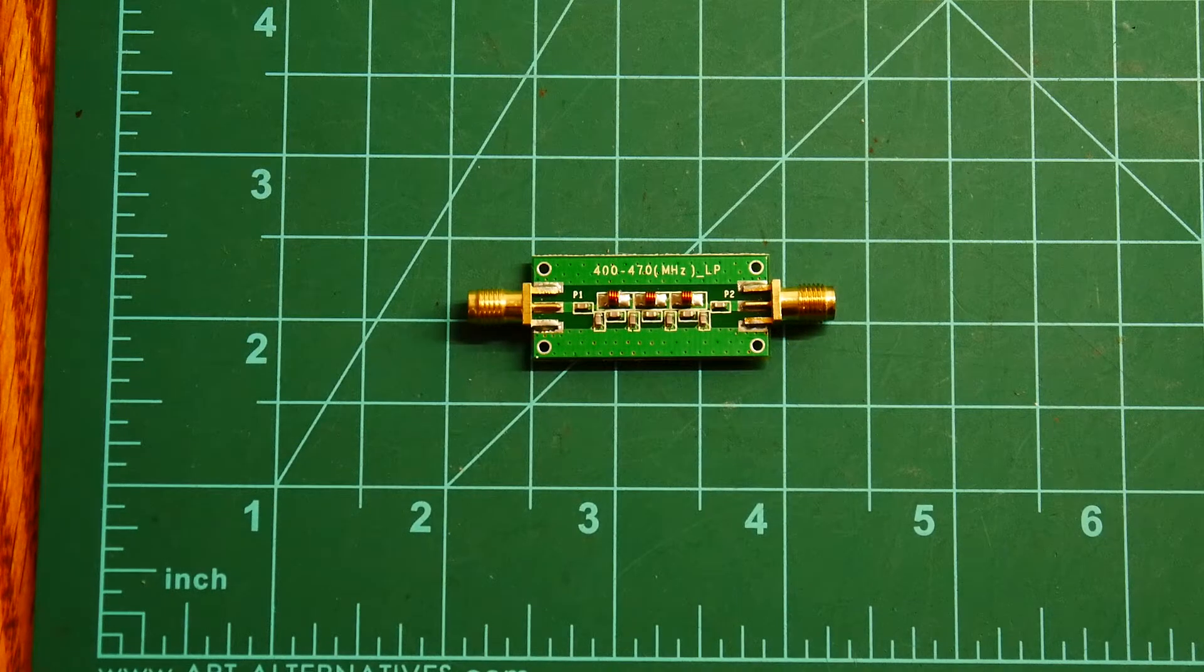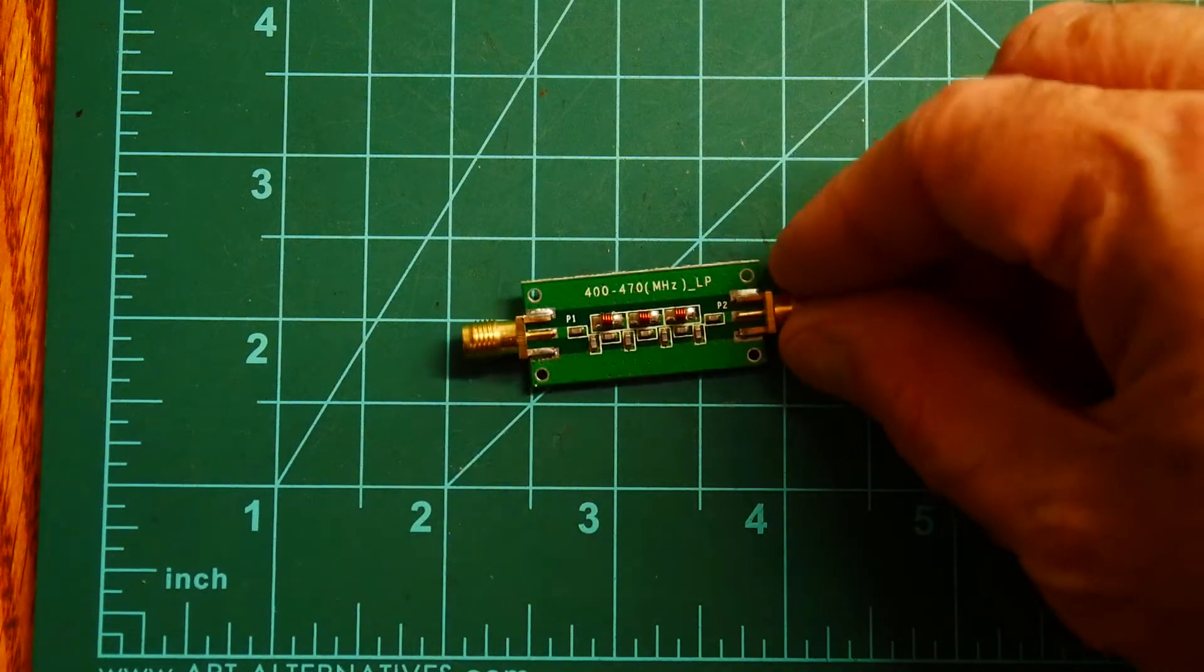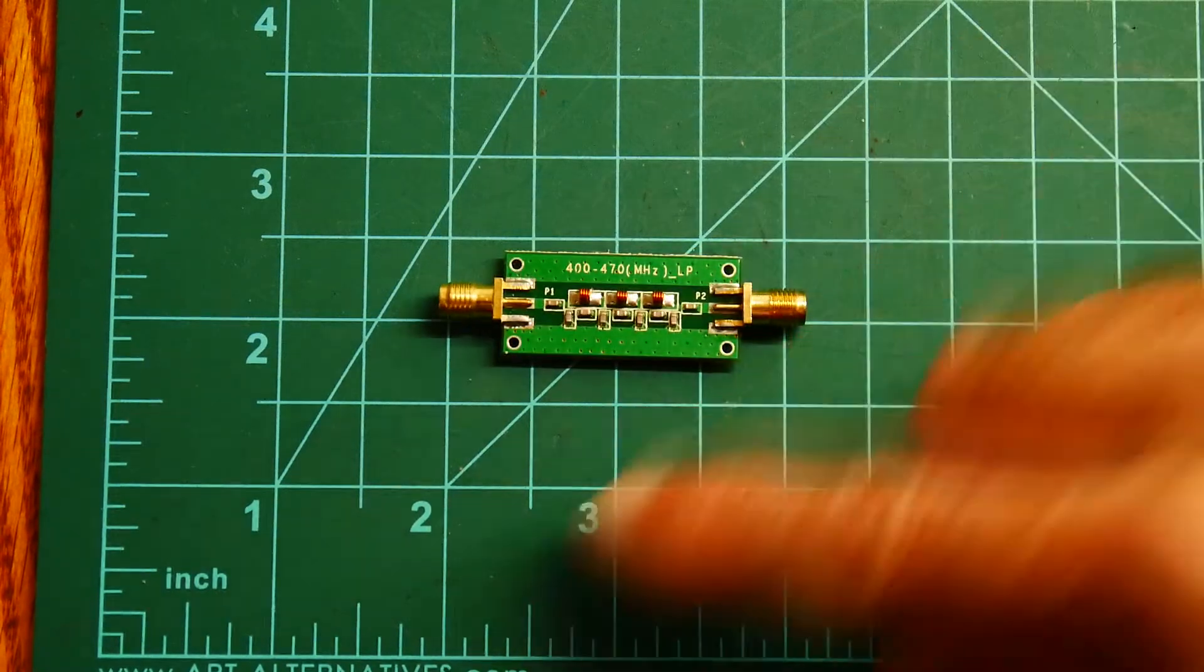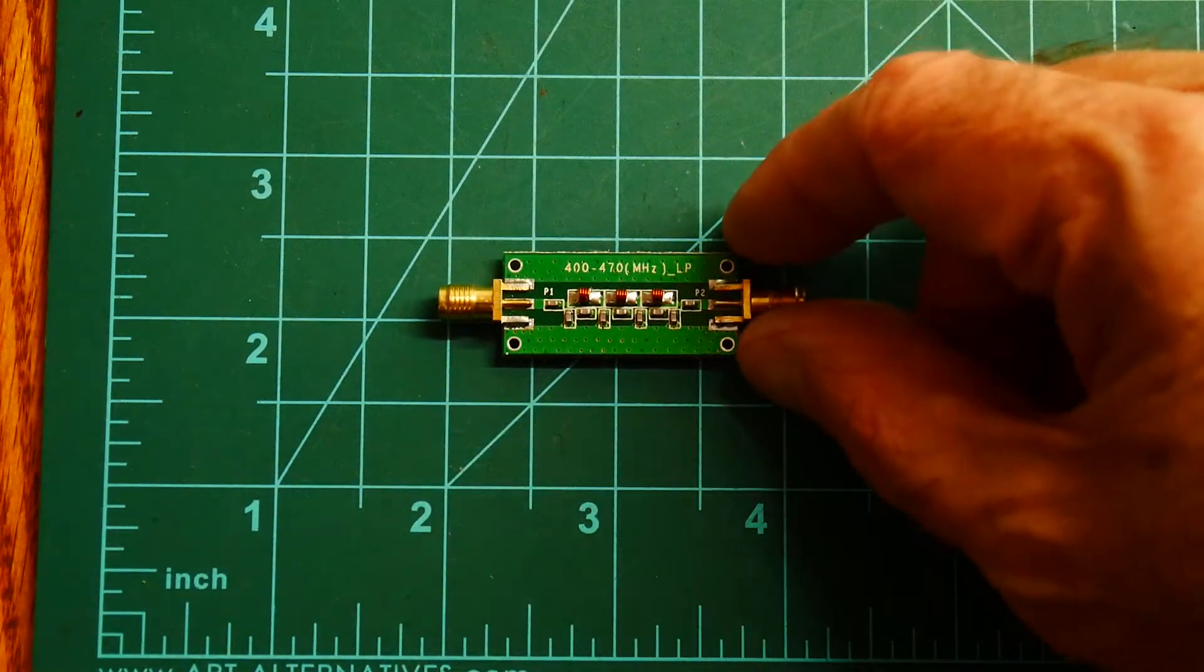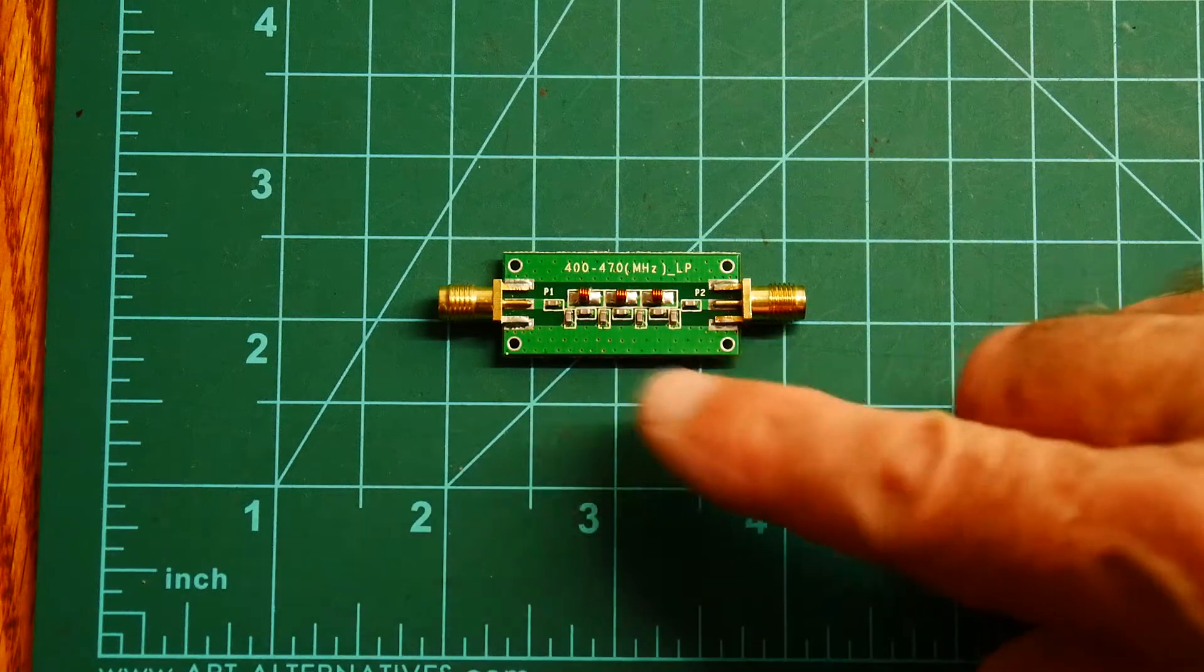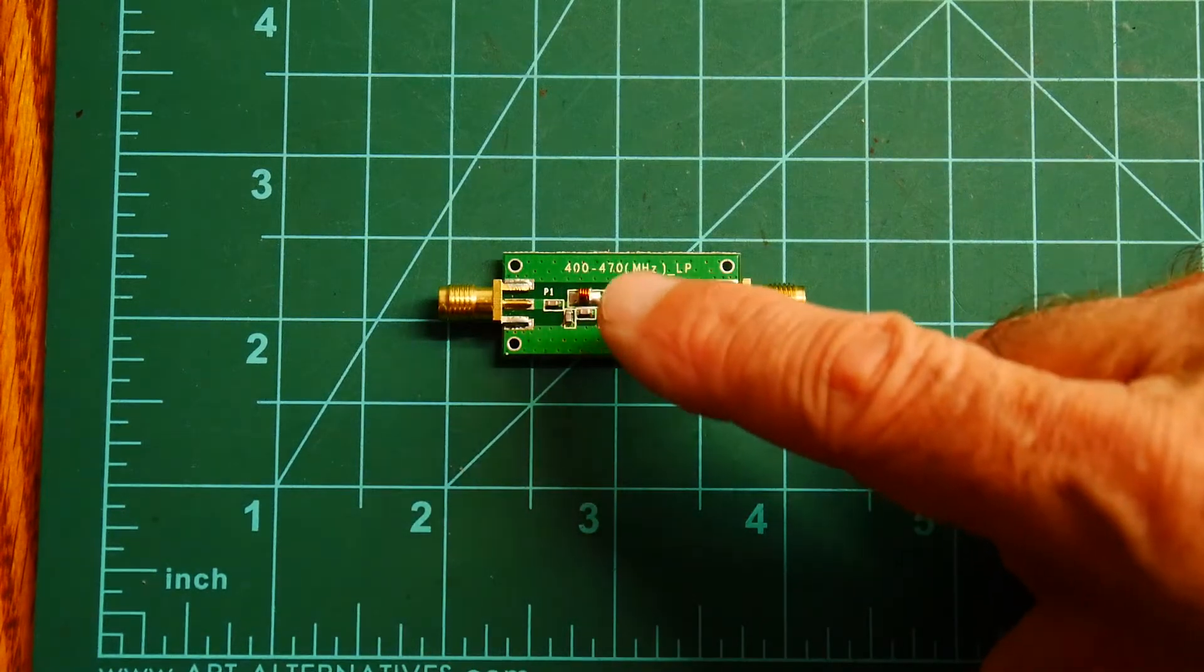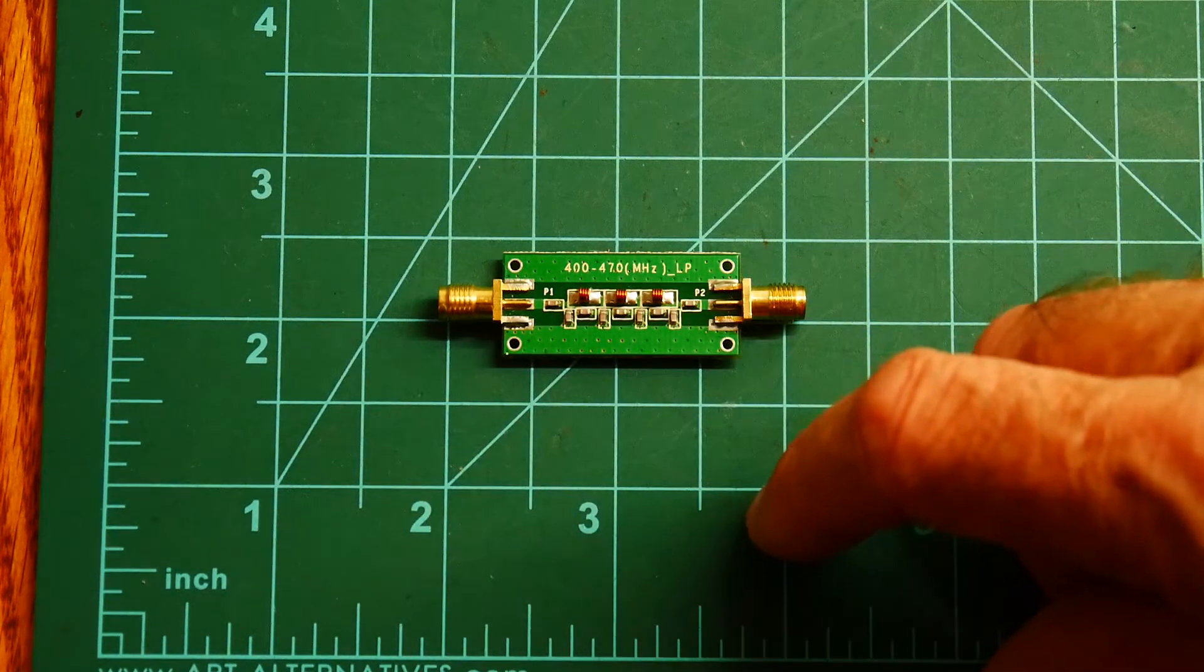Okay, here's something I couldn't resist on eBay. Somebody was selling a filter with two SMA connectors on it. It's labeled 400 to 470 megahertz low pass.